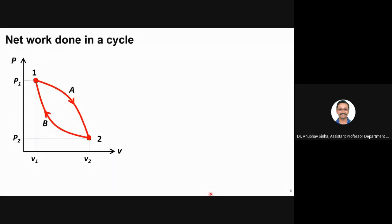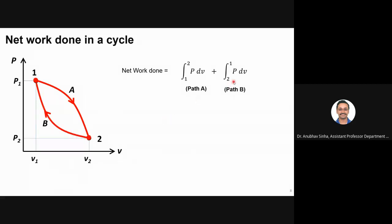Let us talk about the work done in a cycle. A cycle means going from point 1 to 2 and coming back to point 1. The net work done is found by taking the P·dV integration along path A from 1 to 2, plus path B going from 2 to 1. I can also write this as integrating path A from 1 to 2 minus the reverse of path B from 1 to 2, which is a simple sign-change of the integration.